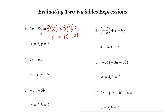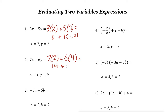So the value of 3x plus 5y is 21. Next, for the expression 7x plus 6y, x equals 2 and y equals 4. So 7 times 2 plus 6 times 4 equals 14 plus 24, which gives us 38. The value of 7x plus 6y is 38.